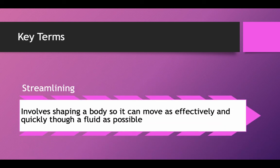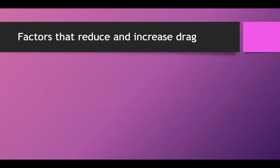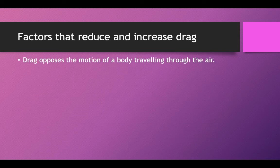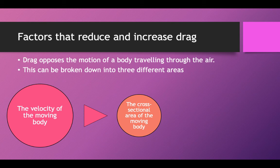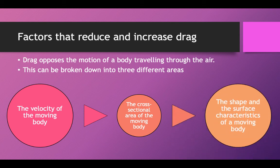Key term: Streamlining involves shaping a body so that it can move effectively and quickly through a fluid as possible. Factors that reduce and increase drag: drag opposes the motion of a body travelling through the air. This can be broken down into three different areas — the velocity of the moving object, the cross-sectional area of the moving object, and the shape and surface characteristics of a moving body.